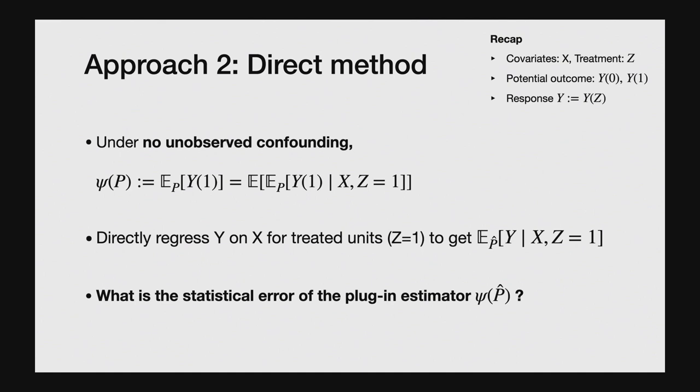The second approach is the direct method, or plug-in method. Focusing on estimating the mean of Y1 (the Y0 case is symmetric): under the no unobserved confounding condition, I can write this as the expectation of the conditional mean of Y1 given X and Z equals 1. Since I observe Y1 when Z equals 1, I can fit a regression model — taking all treated units and using X to predict Y — and then average that regression model to get my final estimator.